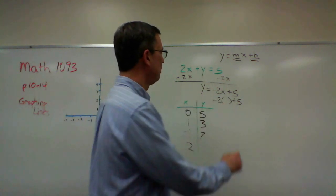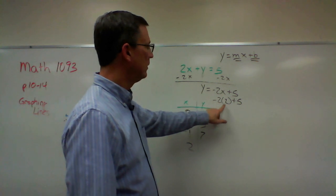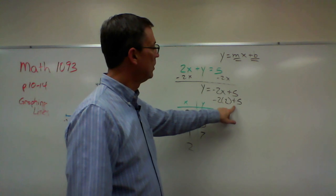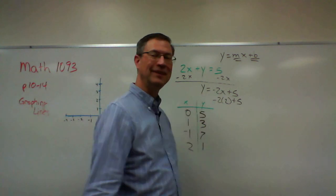And then let's do one more. I'm going to plug in 2 for x here. I get negative 2 times 2, which is negative 4. Negative 4 plus 5 is 1.